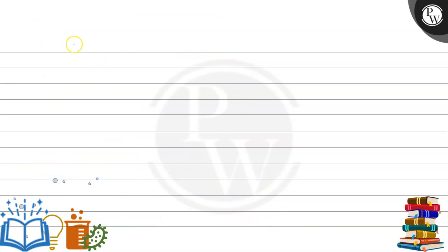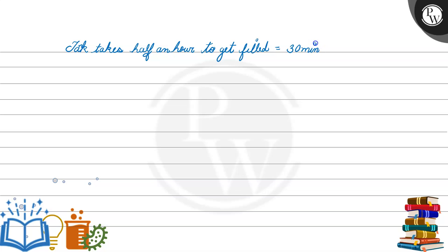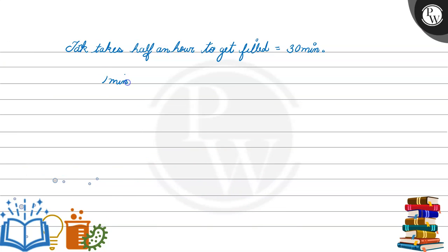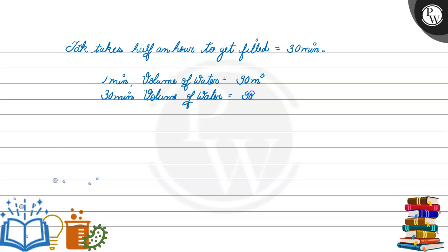अब हमें दे रखा है: tank takes half an hour to get filled। Tank को half hour लग रहे हैं fill होने में, इट मींज 30 minutes। अब हमने देखा था कि volume of water per minute 90 meter cube है। तो 30 minutes में कितना volume of water outlet होगा? 90 into 30, which is equal to 2700 meter cube।